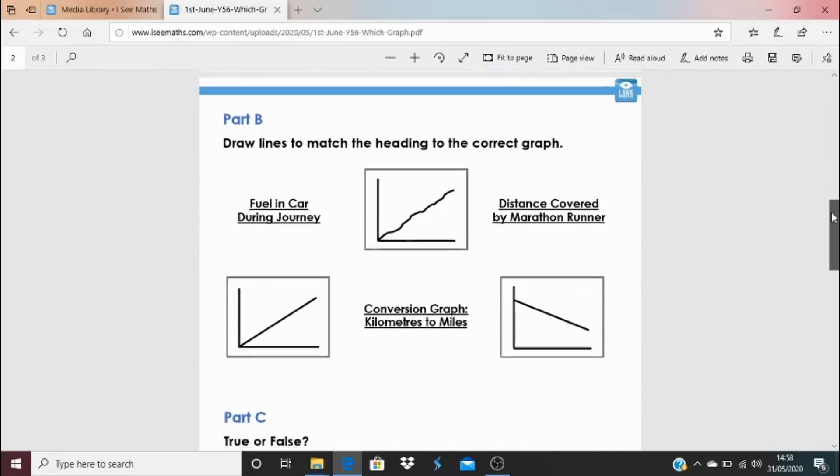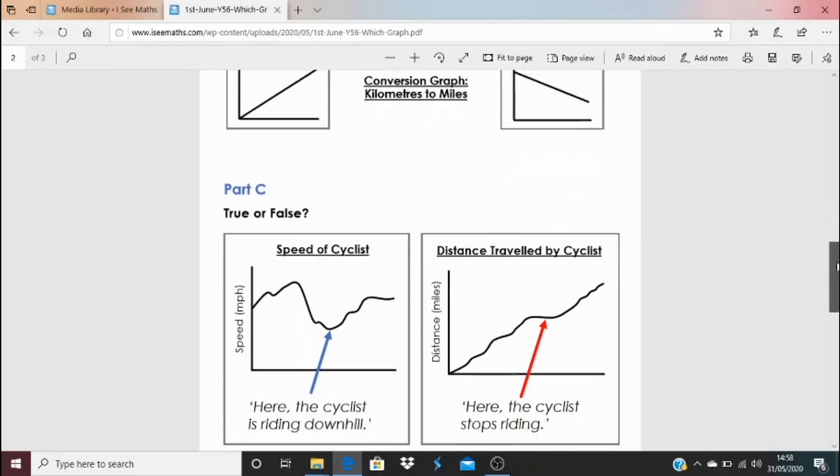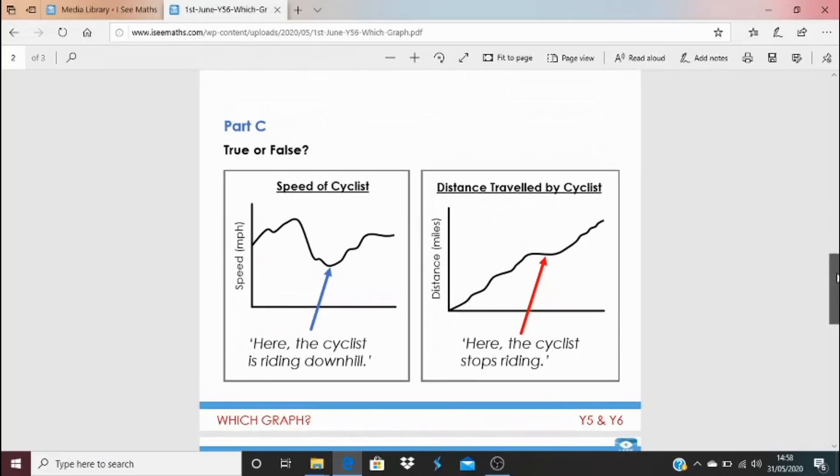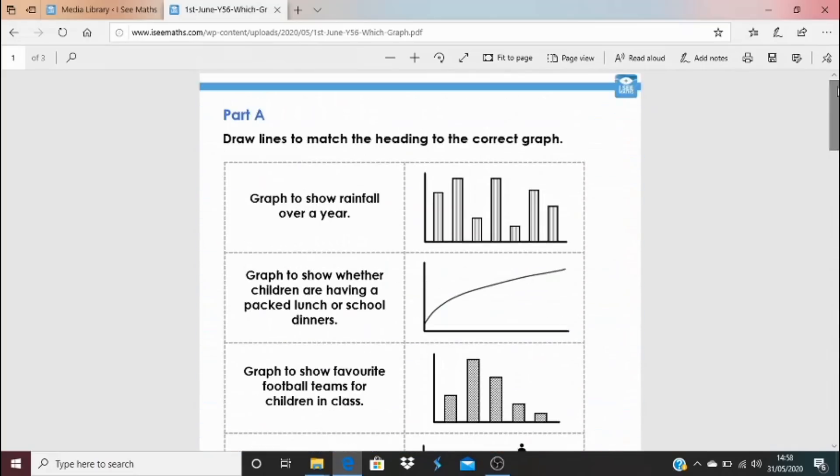If you want to have a go at part B, so I think everyone will have a go at part A. Part B, see if you can match these headings here to the correct graph. And how do you know which graph fits with which heading? And finally part C, if you're still going, is true or false? So have a look at these two statements here. We've got graphs showing the speed of a cyclist and the distance traveled by a cyclist. And do you think that these statements here are true? Or are they false? And how do you know? The answer is at the bottom. And again, I hope you enjoy it. I'm going to be back and I'm going to see you then tomorrow.